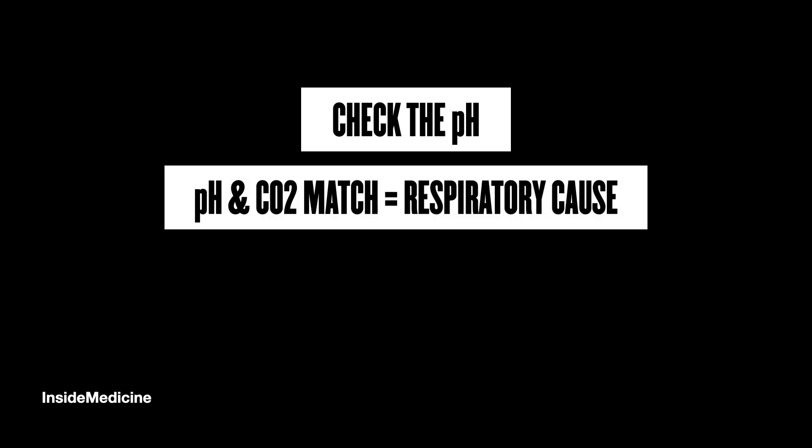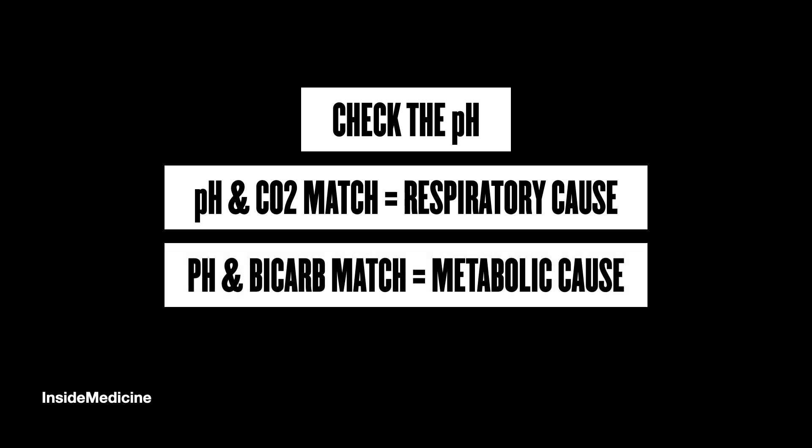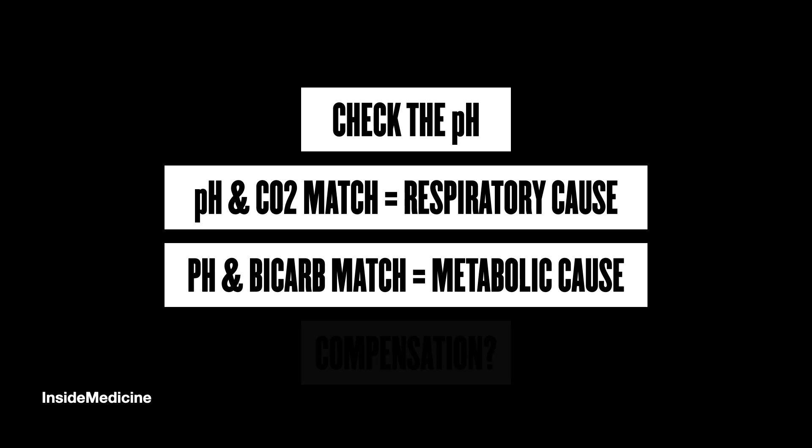Now it's time to assess for acidosis and alkalosis. Start by looking at the pH — it might be normal, acidotic, or alkalotic. If it's acidotic or alkalotic, find the most likely cause: if the pH matches the CO2, it's probably a respiratory cause; if it matches the bicarbonate, it's probably metabolic. Sometimes it matches both, giving a mixed picture. After identifying the cause, assess whether there's any compensation.